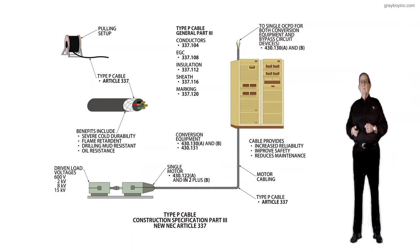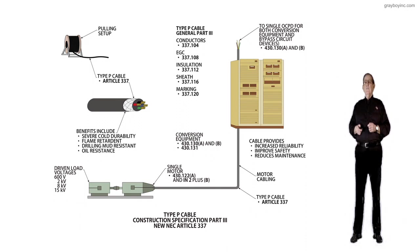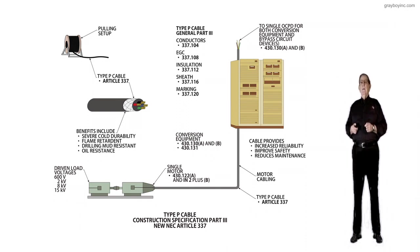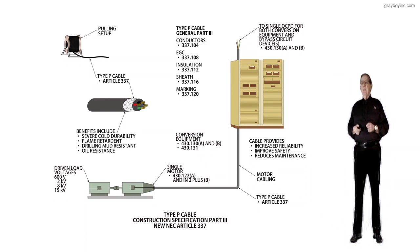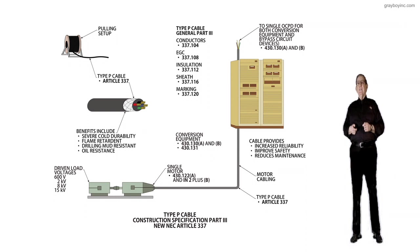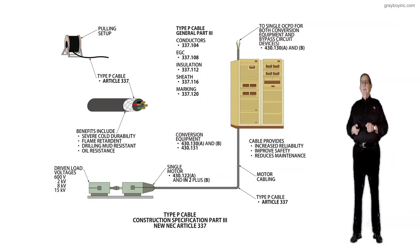Now the conversion equipment itself is the bullet right next to the bottom of the adjustable speed drive in the title of the call-out, conversion equipment. And we would review 430.130 A and B as in Apple and Boy, and 430.131.